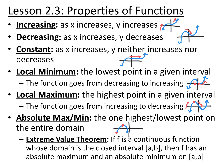The extreme value theorem says that if you have a continuous function — meaning you can draw the entire graph on its domain without picking up your pencil, with no jumps, holes, gaps, or asymptotes — and you have a closed domain with two endpoints, then you must have an absolute max and an absolute min, because it's going to stop at some point.